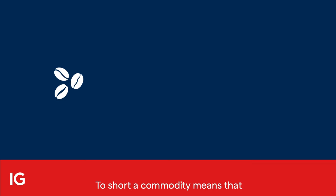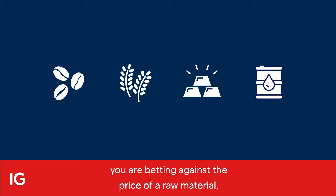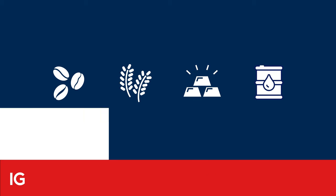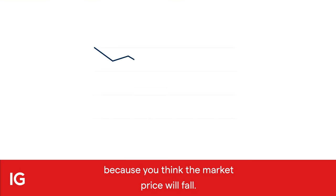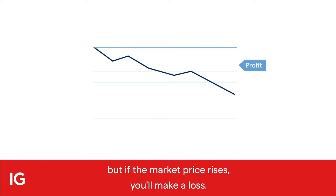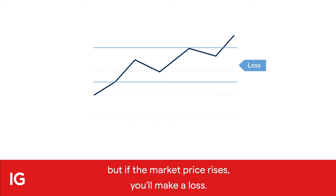To short a commodity means that you are betting against the price of a raw material such as oil or gold, because you think the market price will fall. If you're right, you'll make a profit, but if the market price rises, you'll make a loss.